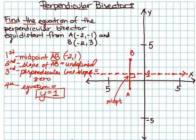So the equation of this perpendicular bisector is y equals 1.